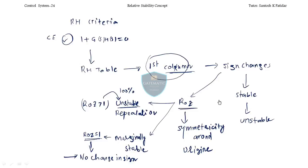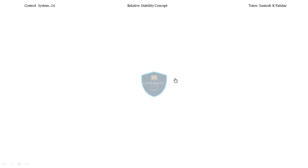This is all we discussed up to lecture 23. Today, in lecture 24, we cover the last concept — relative stability. Relative stability means your system will definitely be a stable system, but we discuss the relative stability between stable systems.